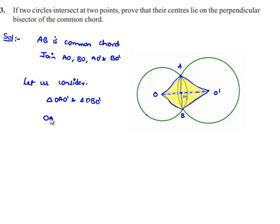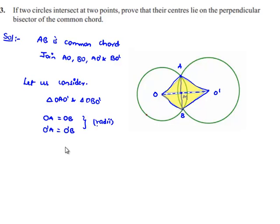In these two triangles: OA is equal to OB since they are the radii of the circle with center O; O'A is equal to O'B since they are the radii of the circle with center O'; and OO' is equal to OO', which is the common side for both triangles.